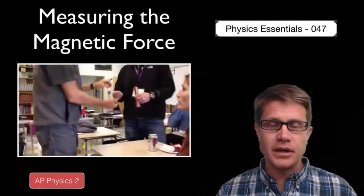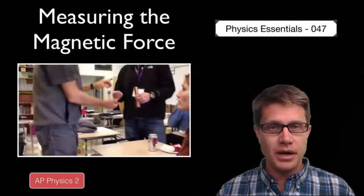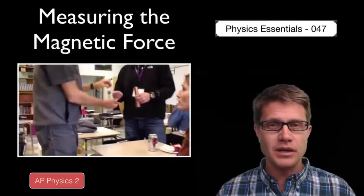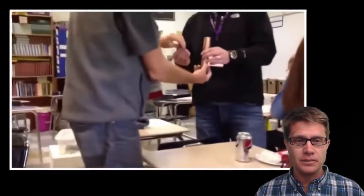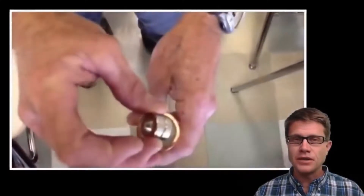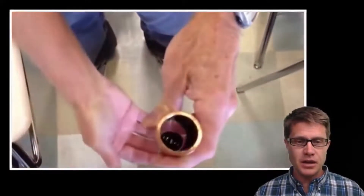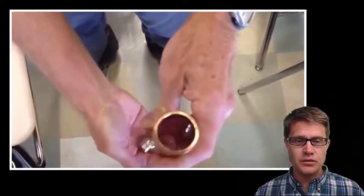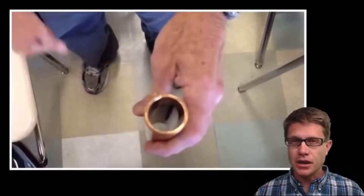In this video a friend of mine is dropping a magnet through a copper pipe. Watch how long it takes for the magnet to make it through. I took a video of it from above and you can see that it is almost hovering as it moves through the copper pipe. So what is going on?